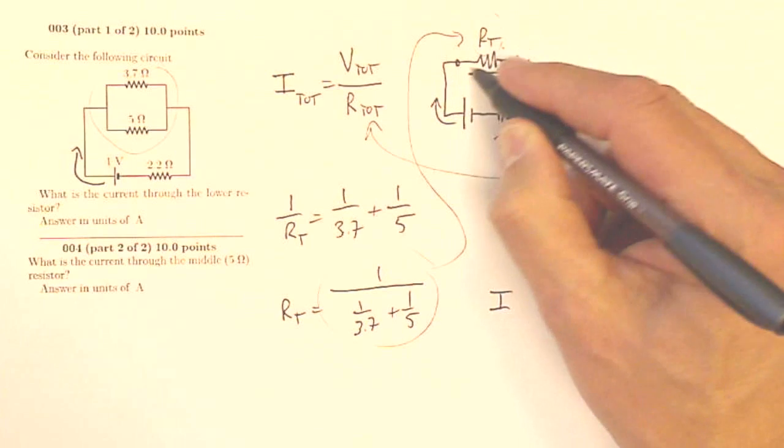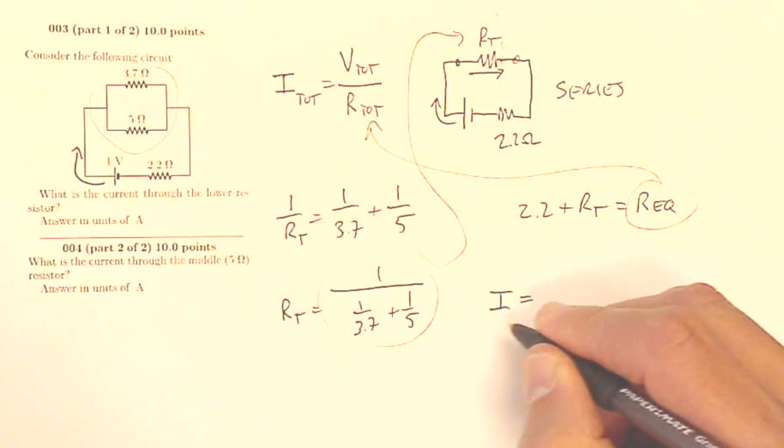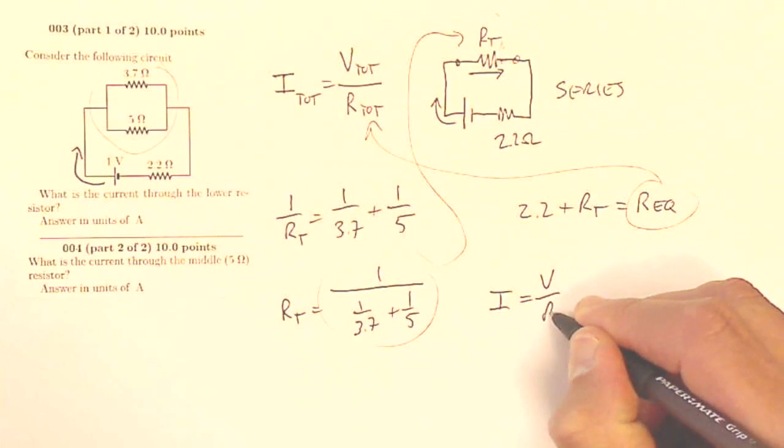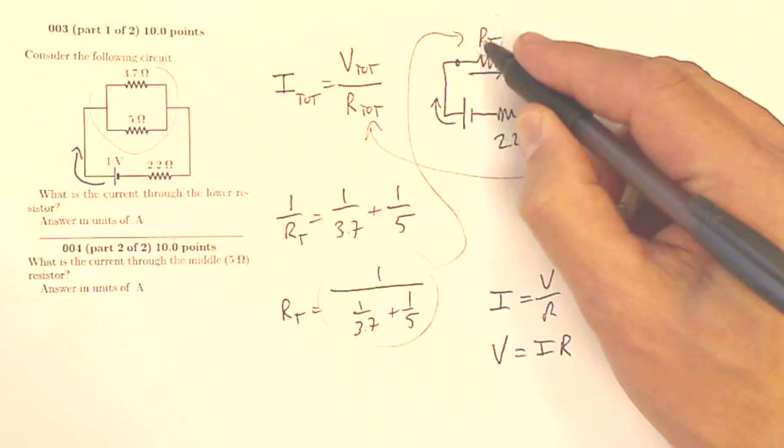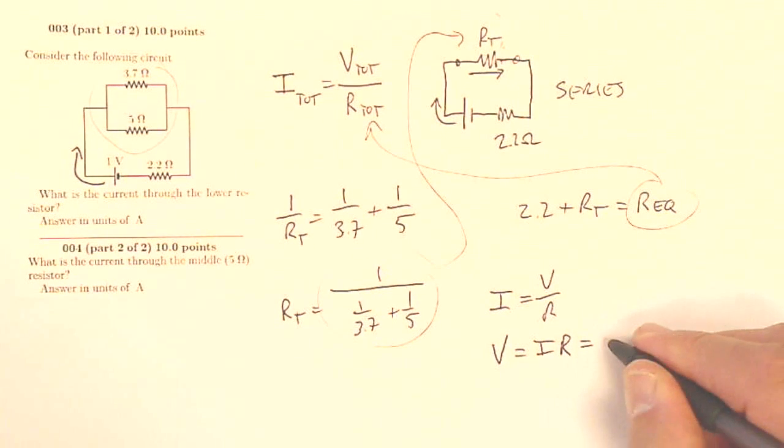So now using this, I can find out my current, because my I of this equivalent resistor is going to be V over R, so the voltage of that resistor is going to be the current that leaves the battery flowing through that resistor, that total resistance. So that will give me the voltage.